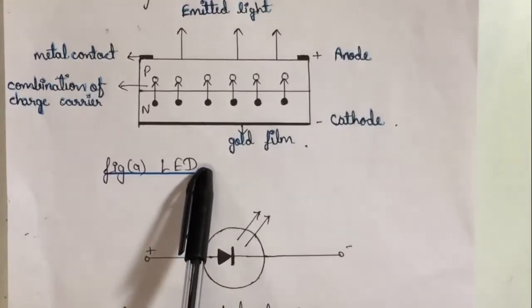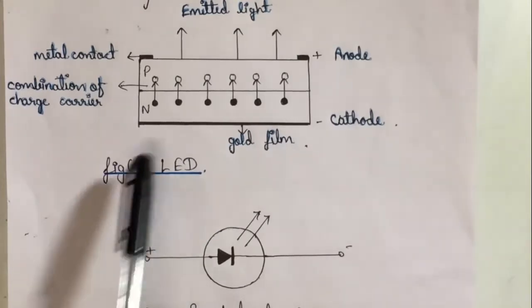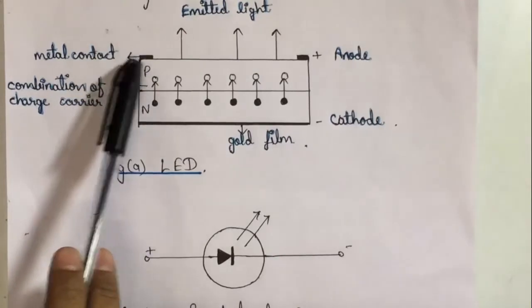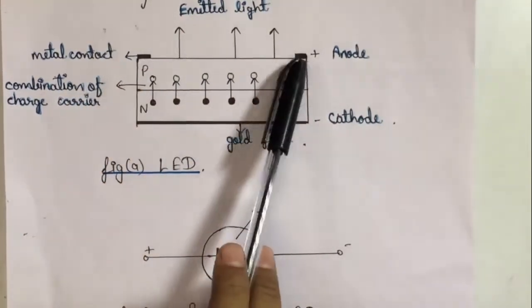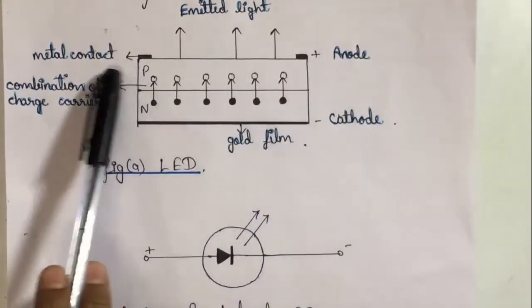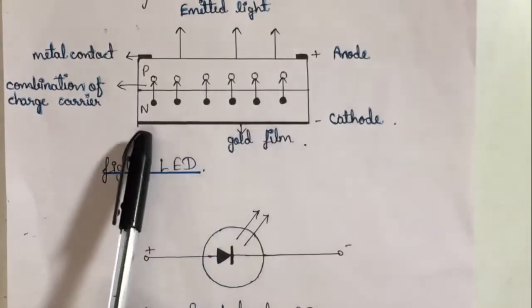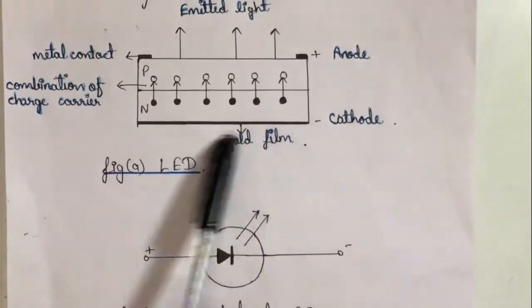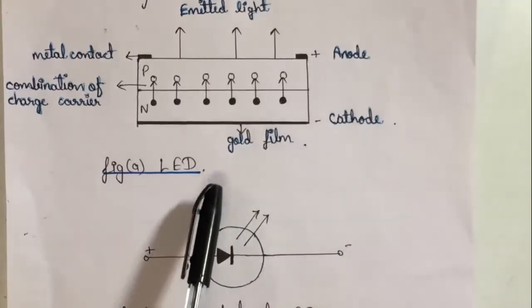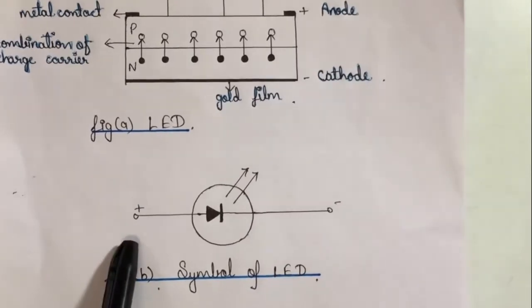Here is the construction diagram of LED. With the help of this we can understand the construction. This is the P-type region and this is the N-type region. The metal contacts are connected at both corners of the edges. This acts as anode. These are holes and these are electrons in the N region. This is the gold film at the bottom which acts as cathode. Below this, here is the symbol of LED. This is anode and this is cathode. These arrows represent the emitted light.